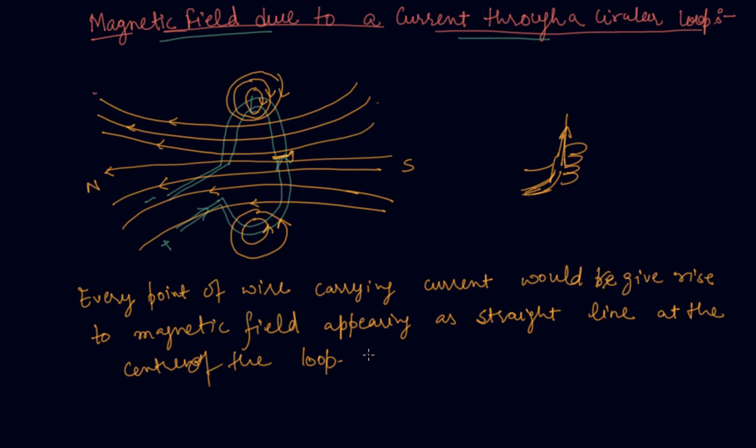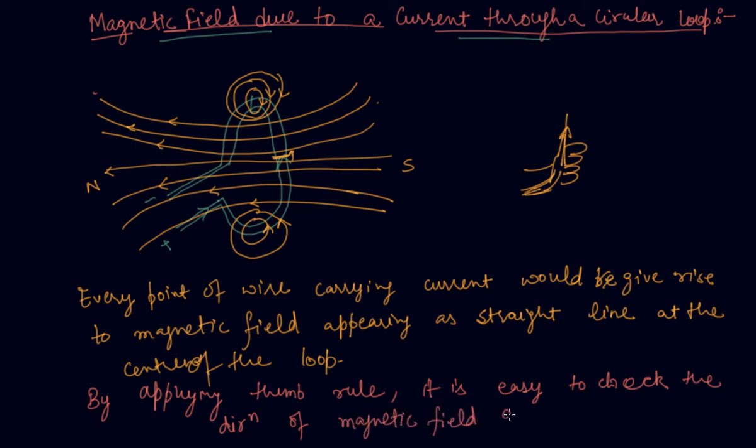By applying the right hand thumb rule, it is easy to check the direction of magnetic field at every point.